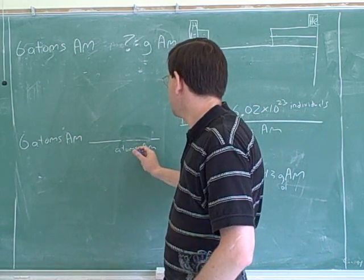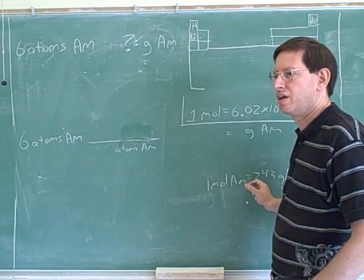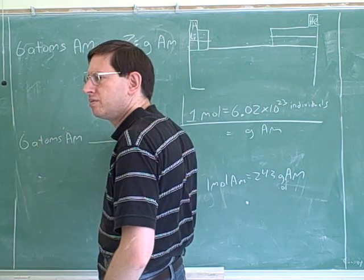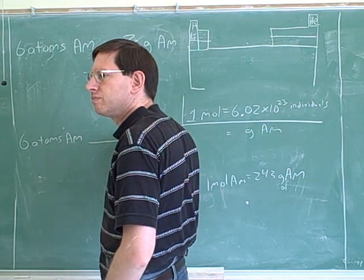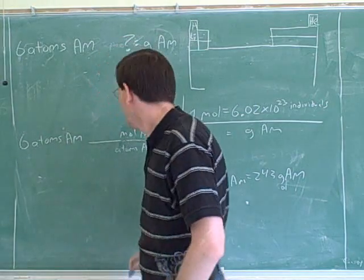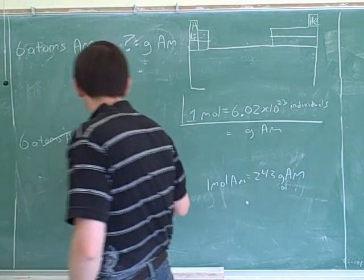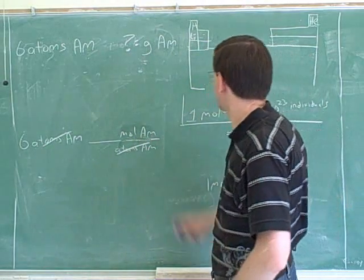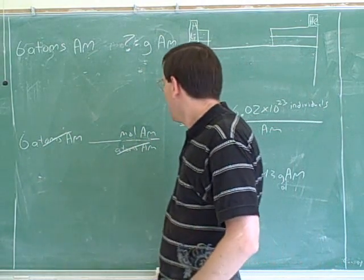All right. So what are we going to have to do? What do we need to change this into in order to be able to use this equivalency? Yeah. So what unit should I put up here? I think we're on the right track. That's right. Moles of americium. I'll put in this slash. How do I know that those are useful? Because then I can use this equivalency. I need to get moles before I can use the periodic table.